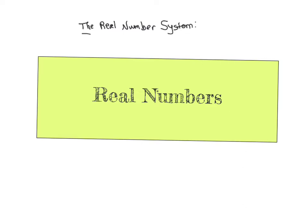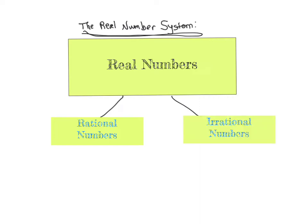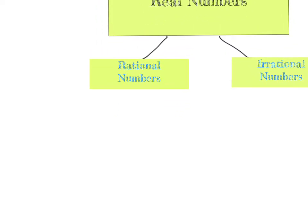In the system of real numbers, or the real number system, it's important to realize that all real numbers can either be rational numbers or irrational numbers. But I'll come back to what makes them rational or irrational in a sec. Let's zoom in on just the rational numbers for now and look at what is inside of them.